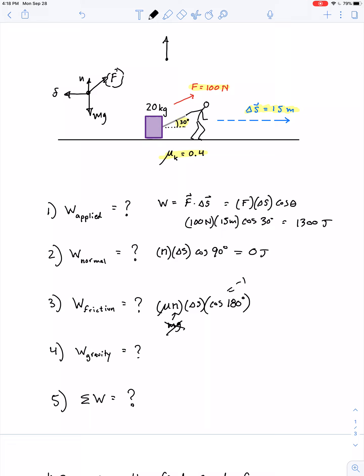We've got a couple vectors that point up: normal force plus a component of the applied force, F sine theta. In the forward direction, we have the other component of the applied force, F cosine theta. Downward is mg, and to the left is the friction force.